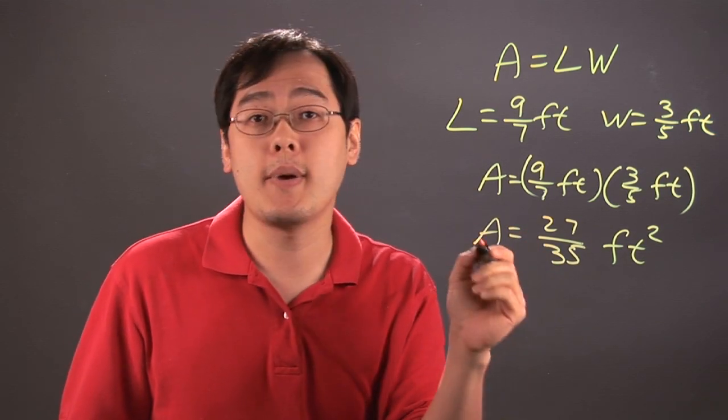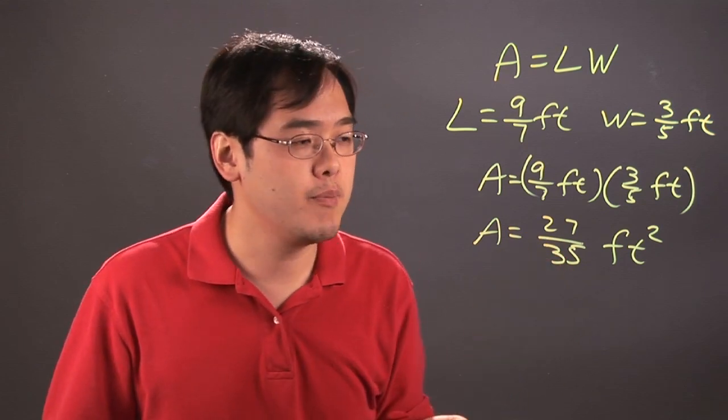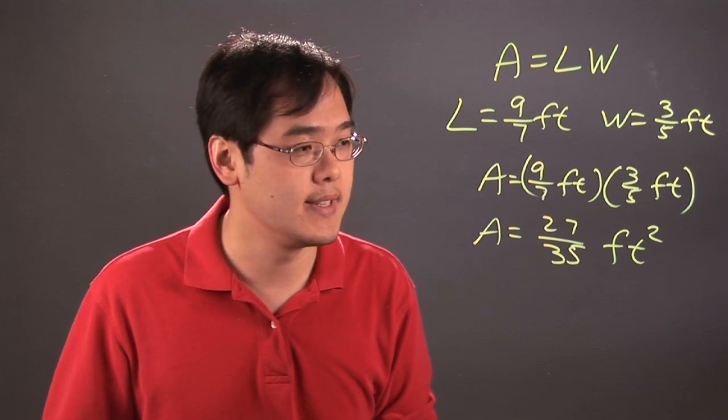Now you can think about reducing it if possible. Let's see, 27 and 35 don't have any common factors, so you have to leave it as is.